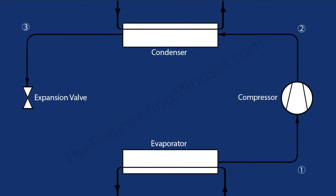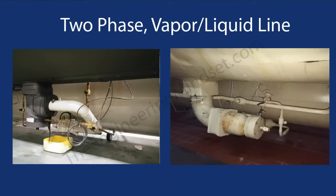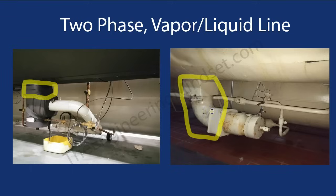As the refrigerant leaves the expansion valve and heads back into the evaporator, we draw that line to complete the schematic. The line between the expansion valve and the evaporator is known as the two-phase line and will be referred to as Point 4 on the graphs. On the real chiller the two-phase line is just a short pipe from the top of the expansion valve up to the bottom of the evaporator.